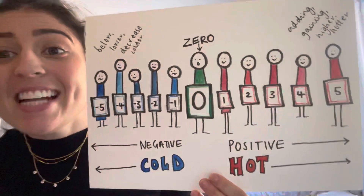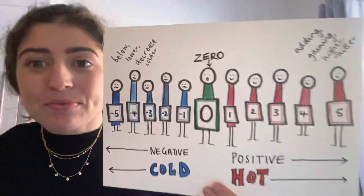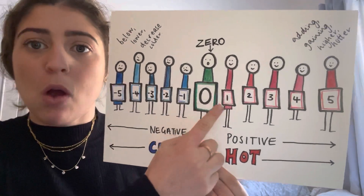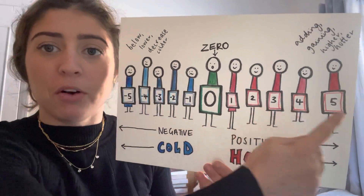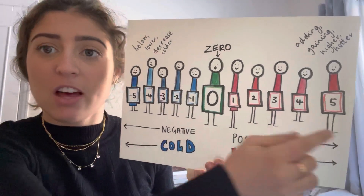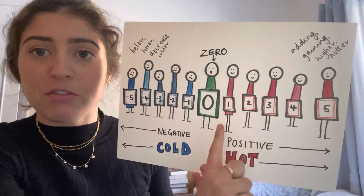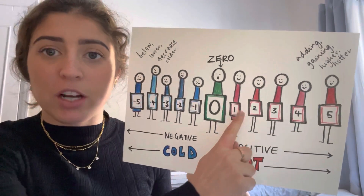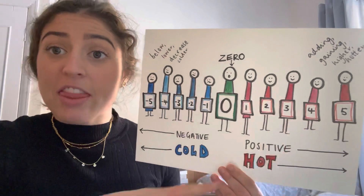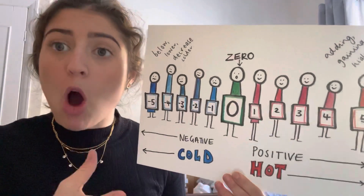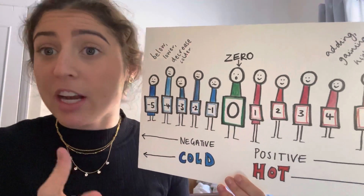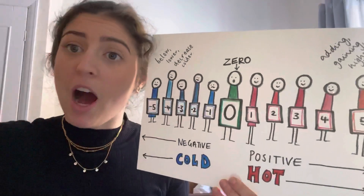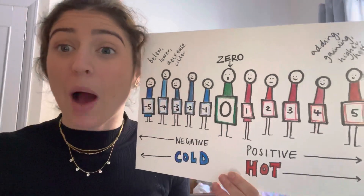This is a number line and you've got numbers 0, 1, 2, 3, 4, 5. So these numbers here, all the red numbers — 0, 1, 2, 3, 4, 5 — they're all positive numbers. So when we're doing our number line, we go 0, 1, 2 and we go up; the numbers go higher.